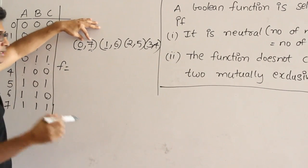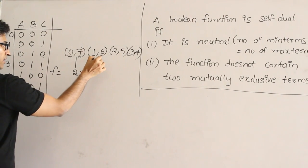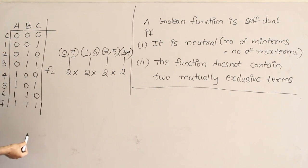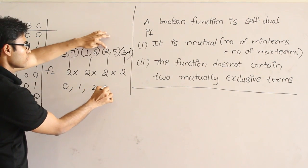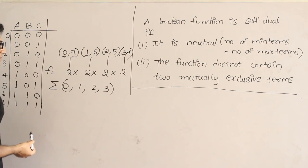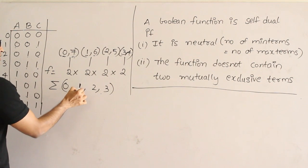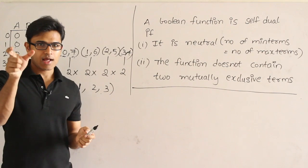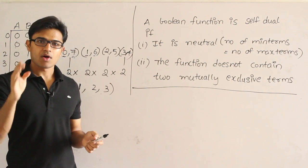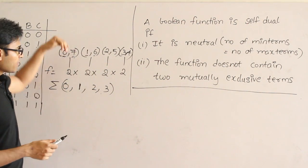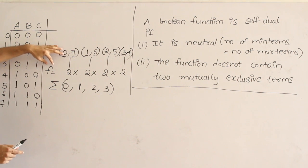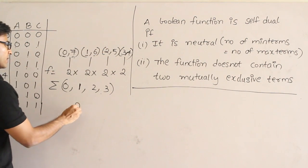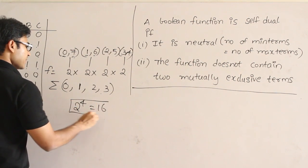What I do is make all the terms into pairs such that each pair contains a minterm and its mutual exclusive term. From each pair, I have to choose exactly one element. So from (0, 7), I can choose only one — 2 chances. From (1, 6), 2 chances. From (2, 5), 2 chances. From (3, 4), 2 chances. Therefore, the number of self-dual functions is 2 to the power 4, which is 16 self-dual functions for 3 variables.